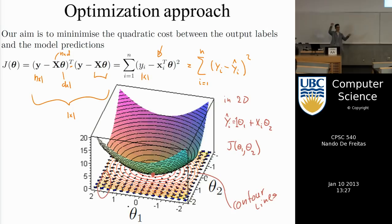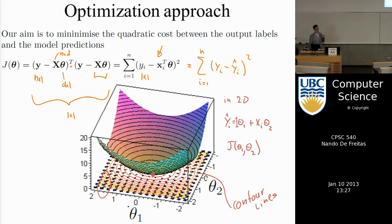We can do this computation analytically here because there's only one minimum. Later, for neural networks, there will be multiple minima and we'll need a computer. But the concept remains the same: the one result from calculus we need is that to minimize a function you follow the derivative and look for the point where the derivative becomes zero.